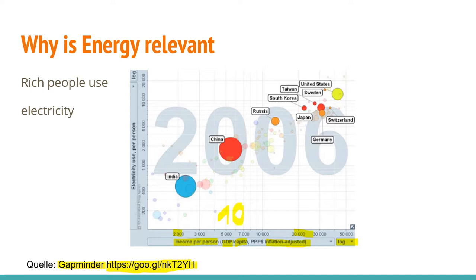If we look at the lower part of the chart, those are countries with very poor people — most of them in Africa. They have a low income, less than $2,000 a year — that means less than $5 a day — and they have almost no electricity use, around 200 kilowatt hours a year. Maybe a mobile phone or air ventilation, but not more.